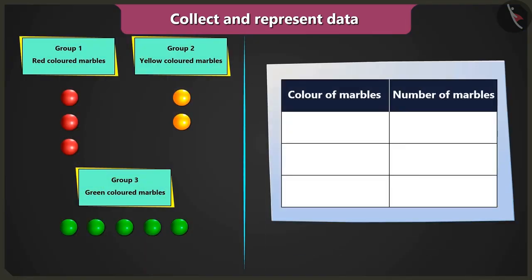Now create a table like this. Then, you have to write the names of the colors red, yellow, and green in the column color of marbles.